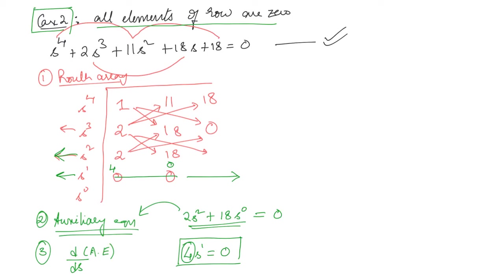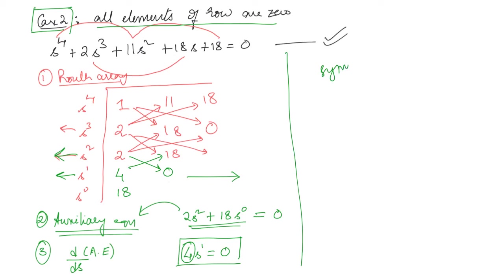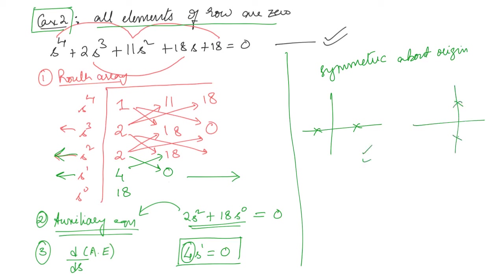Completing the array: (4×18 − 2×0)/4 = 18. When all elements of a row become zero, it means there are roots symmetric about the origin. For example, roots could be on the jω axis, or one in the RHP and one in the LHP, or two in the RHP. In some cases the system is unstable, in others marginally stable — but the roots will always be symmetric about the origin.